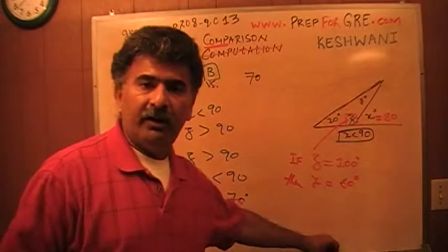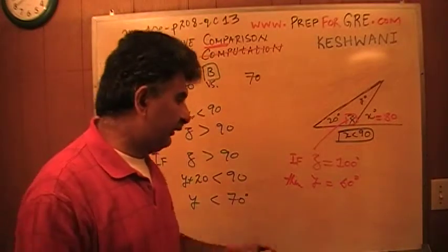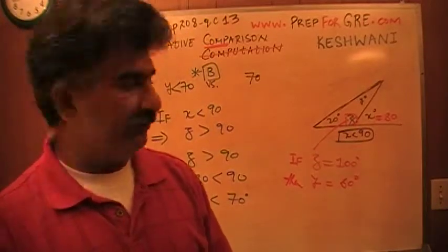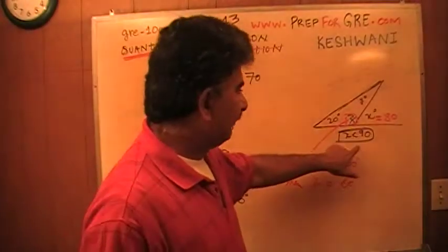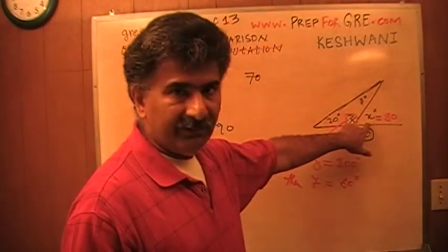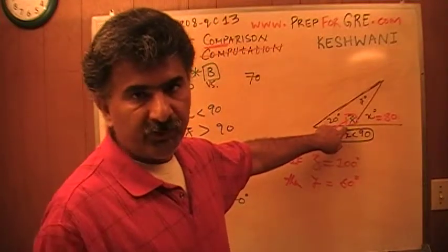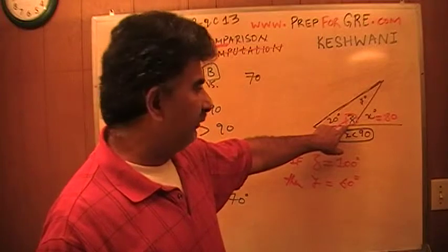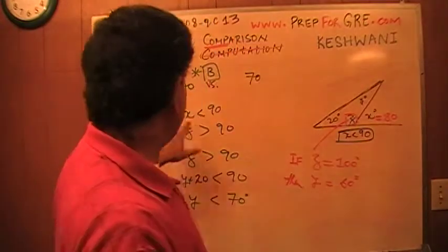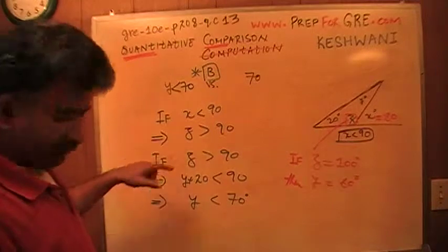So there are two ways you can do this problem. You can plug in numbers and solve it through that, or you can just think logically. If x is less than 90, then z, which they do not show in the picture here, I just gave this angle in there, then the z would have to be more than 90.